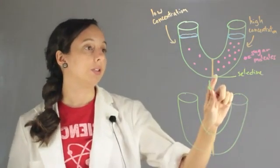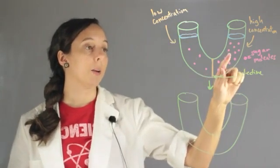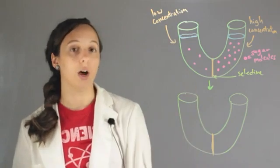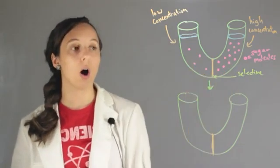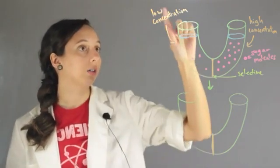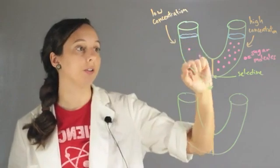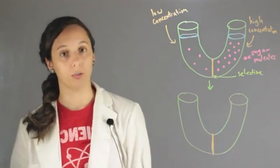And our membrane is going to let the sugar molecules get over to the right-hand side, but it's not going to let them get back. So once a sugar molecule has traveled over here, it can't get back. But water can go both ways. So we have our low concentration side with only a few sugar molecules, and we have our high concentration side with a lot of sugar molecules.